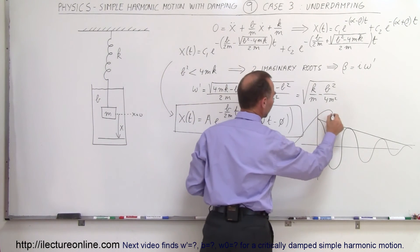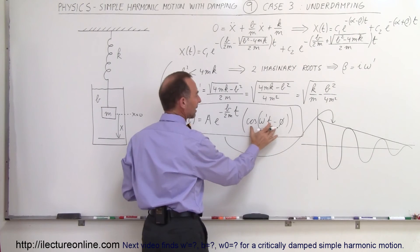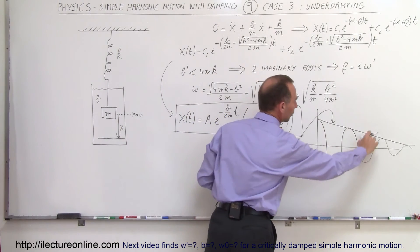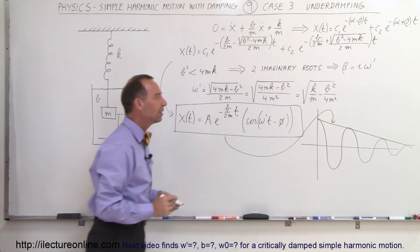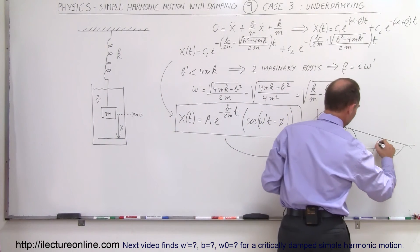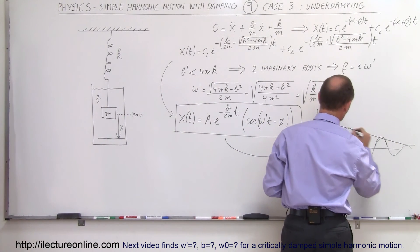And so we have this exponential decay portion of the equation. This is defined by this portion of the equation, so this here determines the exponential decay, and then this will then determine the oscillatory frequency of the decline.